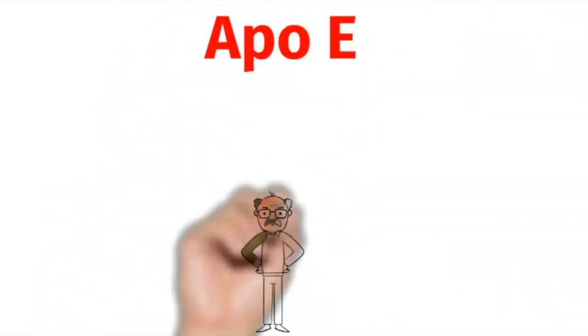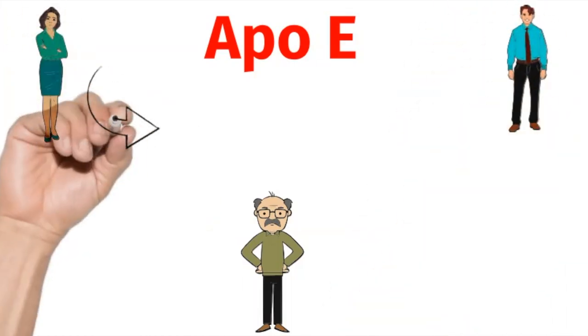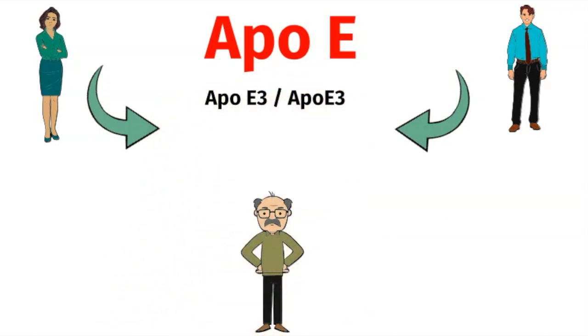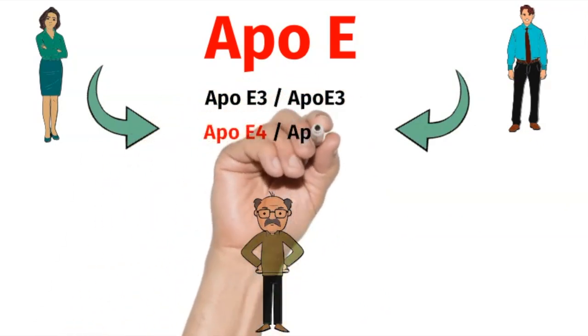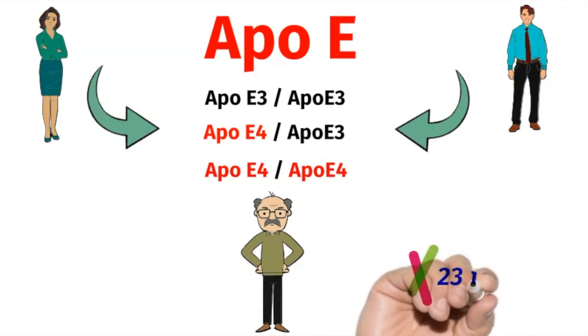We inherit one copy of ApoE from each of our parents. 75% of the U.S. population has two copies of ApoE3, which is the normal genotype. A quarter of Americans have one copy of ApoE4, which unfortunately increases their risk of Alzheimer's to about 30%. 2% of the American population, or about 7 million Americans, have two copies of ApoE4, and unfortunately this increases their risk of Alzheimer's to over 50%. You can find out your ApoE genotype by doing a 23andMe. The good news is there's so much you can do to be proactive and to prevent Alzheimer's, which I'm going to cover in this video today.